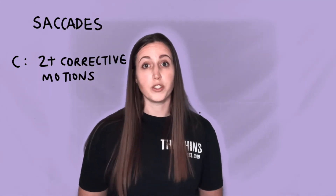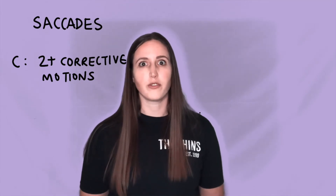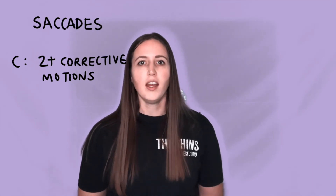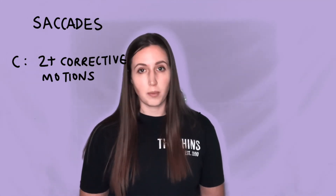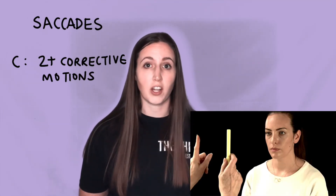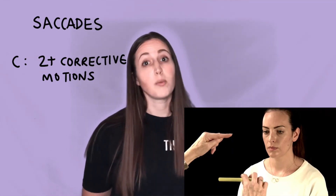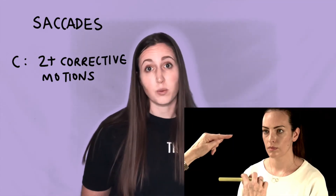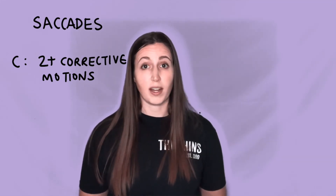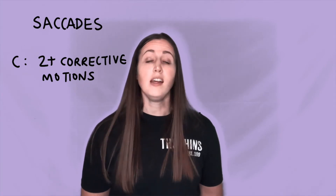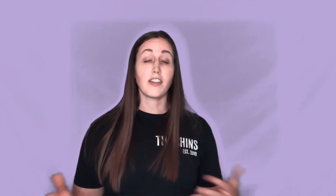To check saccades, you'll hold two pens or two fingers out in front of the patient, and they'll look between them at your command without moving their head. You'll do this a few times and then repeat it vertically as well. If they have more than two corrective motions to find that target, then they may have a central lesion.